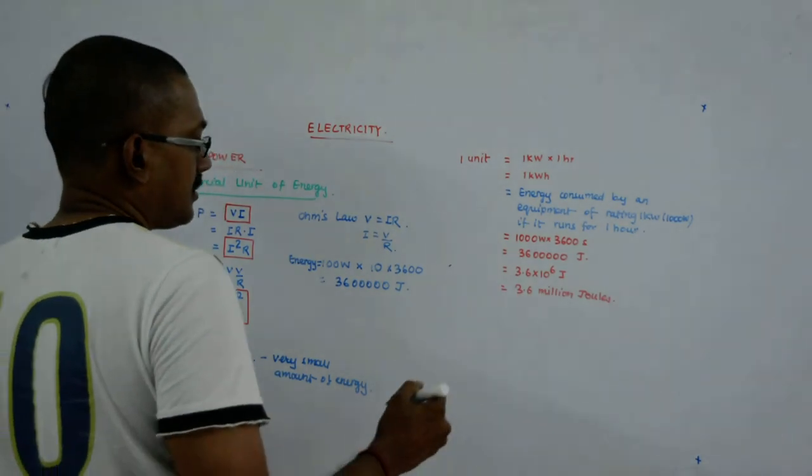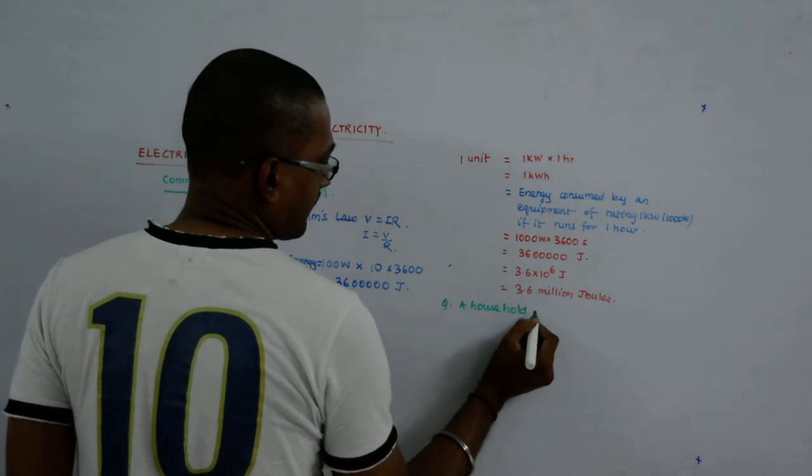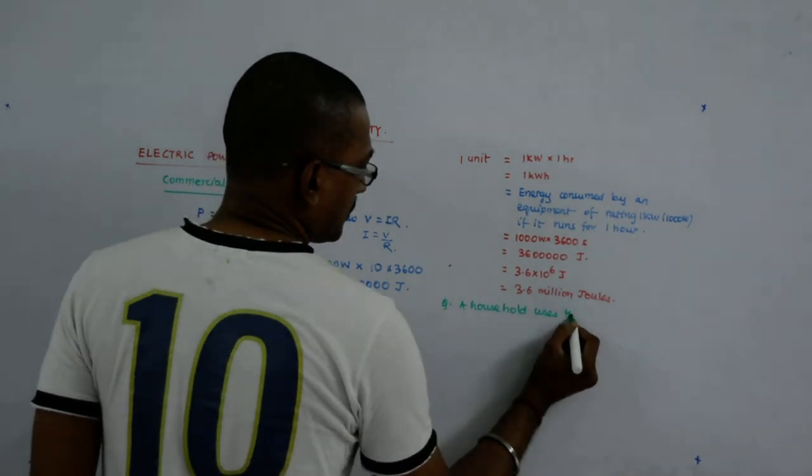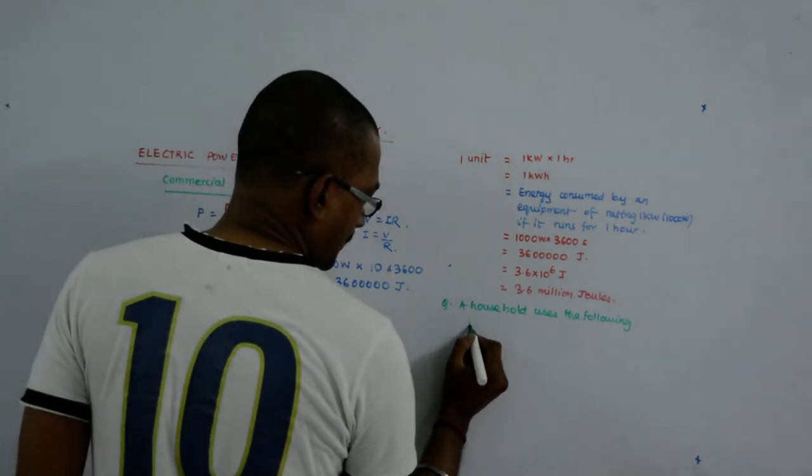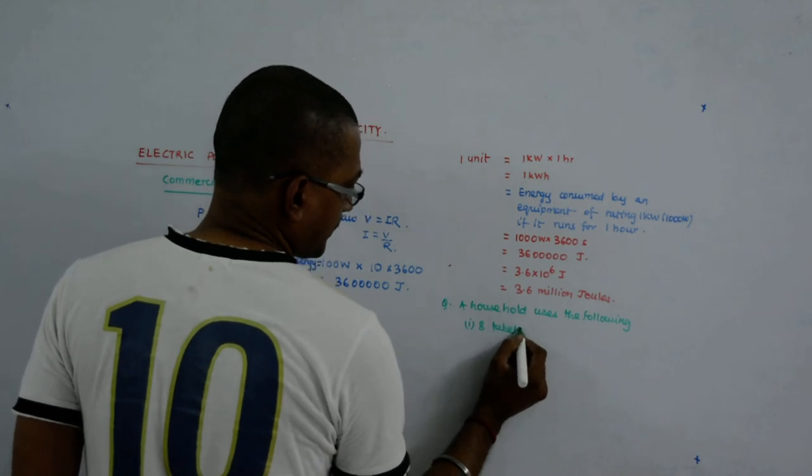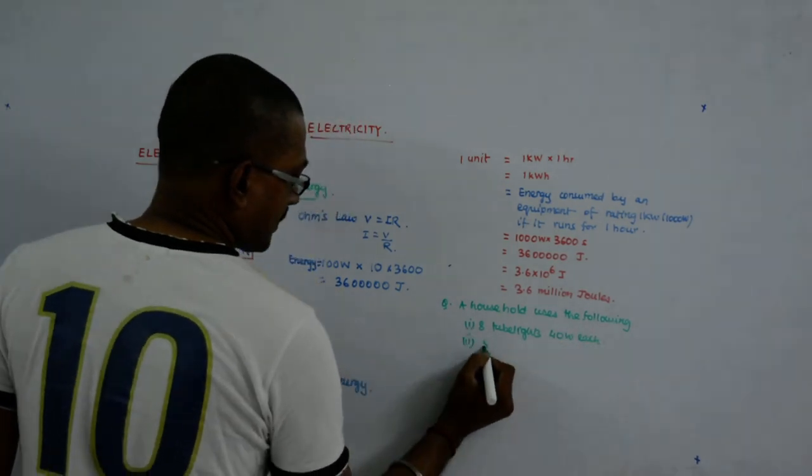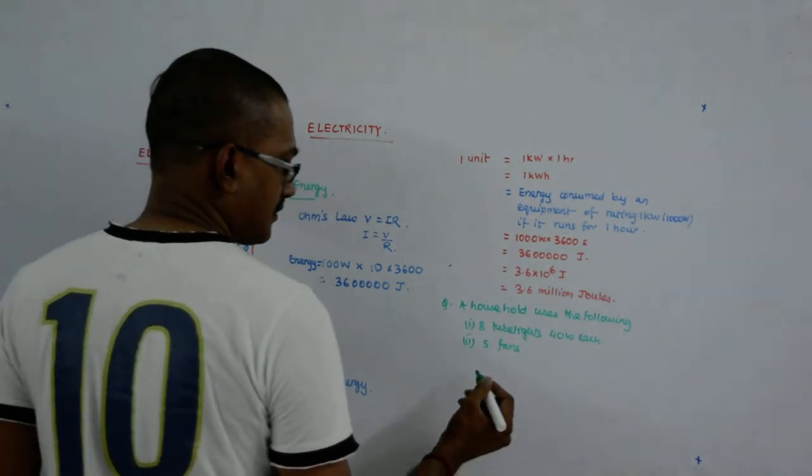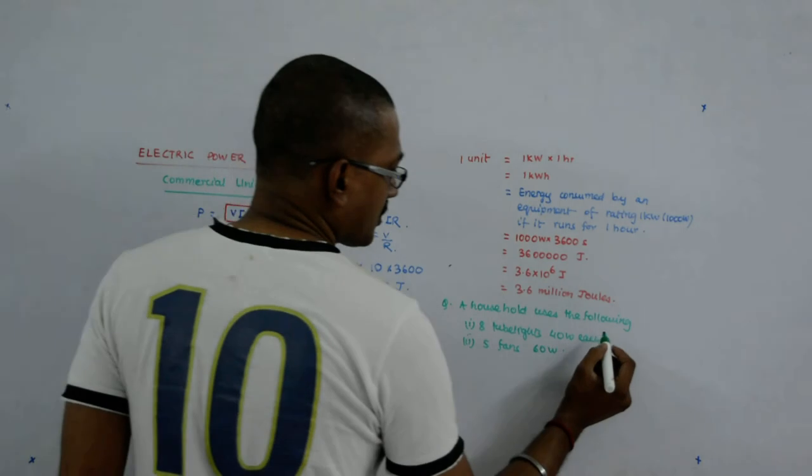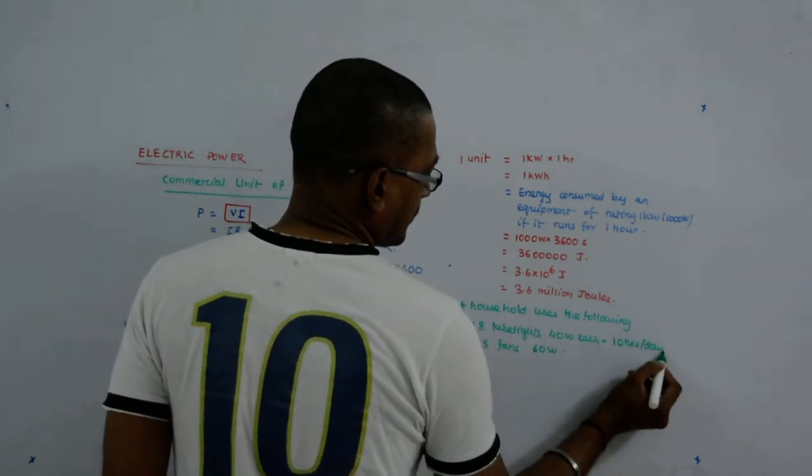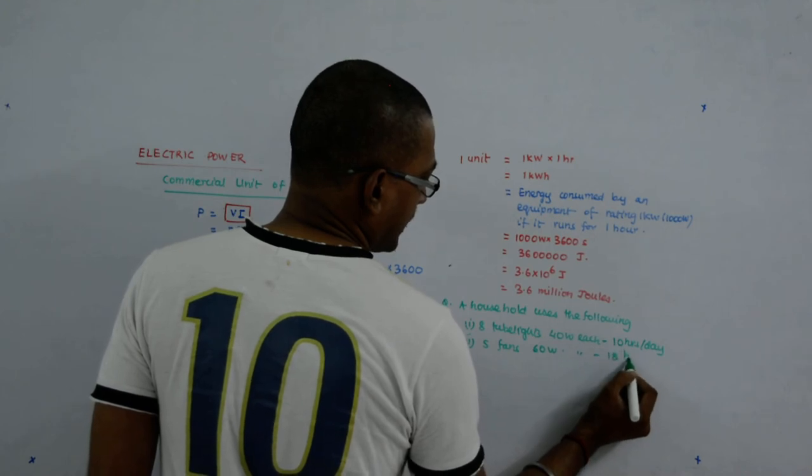Now, can you tell me, a household uses the following: 8 tube lights, 40 watt each, 10 hours per day. 5 fans, 60 watt each, 18 hours per day.